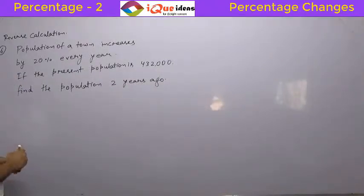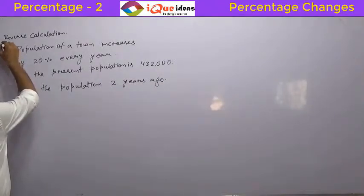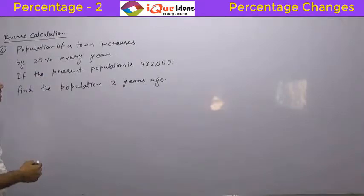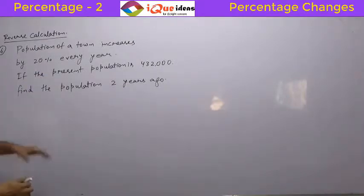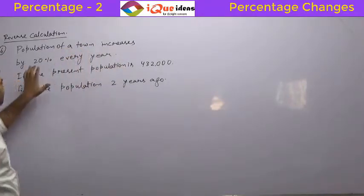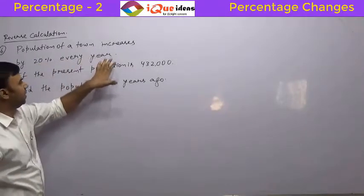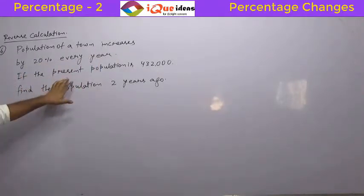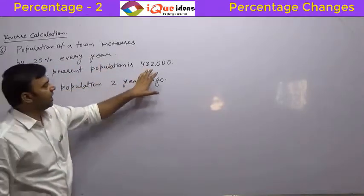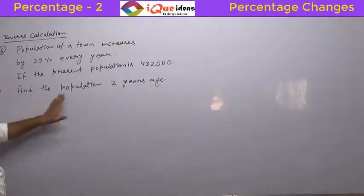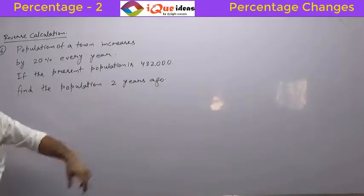The next question is a reverse calculation problem. It says the population of a town increases by 20 percent every year. If the present population is 4,32,000, find the population 2 years ago.